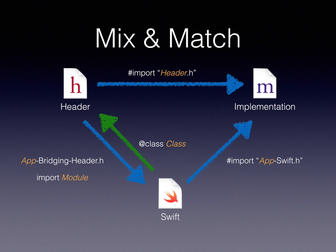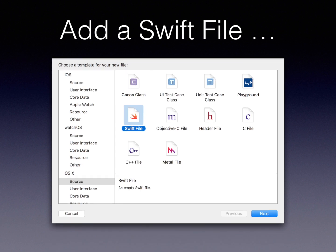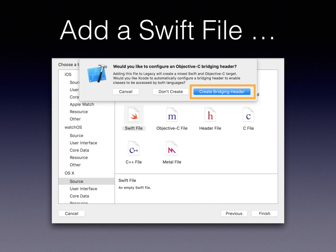When you get started with an Objective-C project and decide the next class will be in Swift, you open File New, select Swift file, and Xcode asks if you'd like to create a bridging header. That's very convenient - it just creates the header and adds it to the build settings. If you say no, you have to do it manually, but that's not magic either. You just create an empty header file and add imports for all the Objective-C classes you want to use in your Swift code.